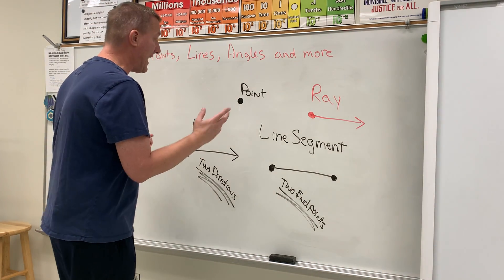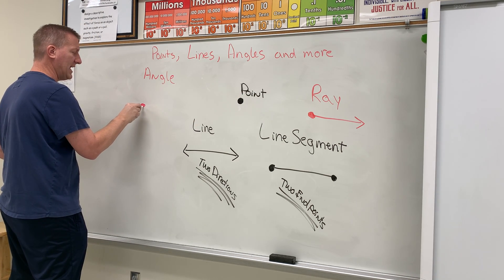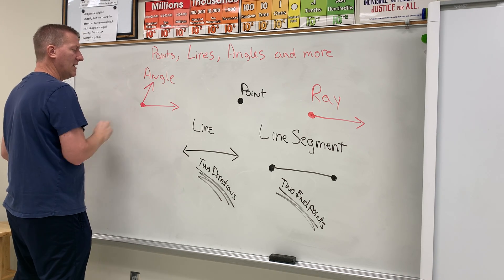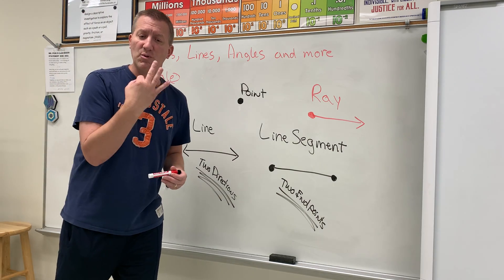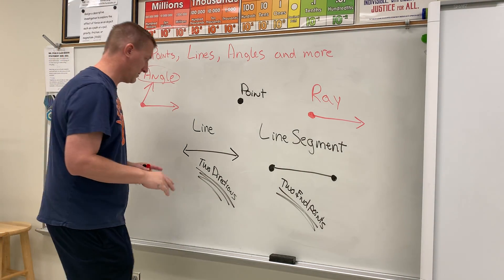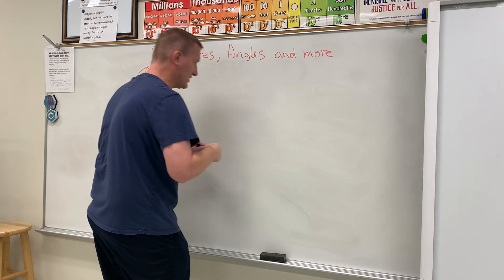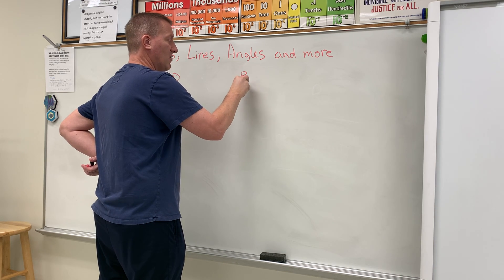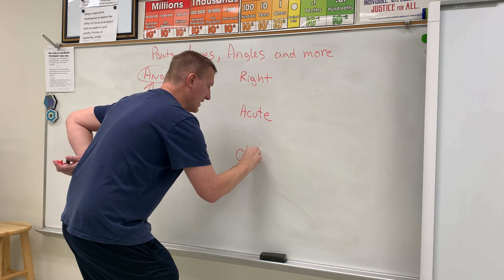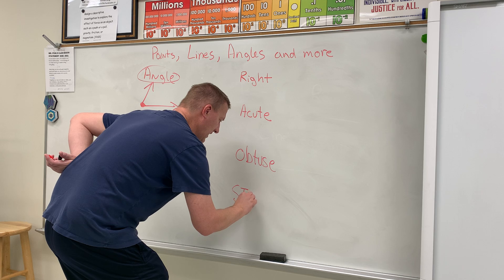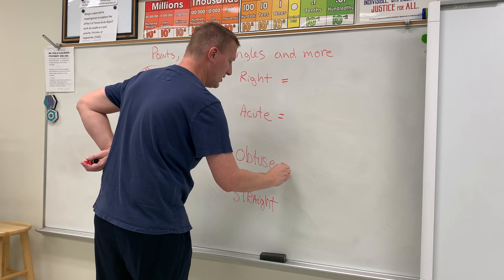Now, angles. An angle is two rays put together. If I draw a ray here and put a ray together here, I have formed an angle. There are actually four different types of angles: a right angle, an acute angle, an obtuse angle, and a straight angle.